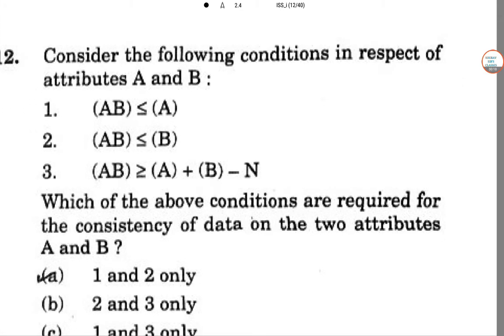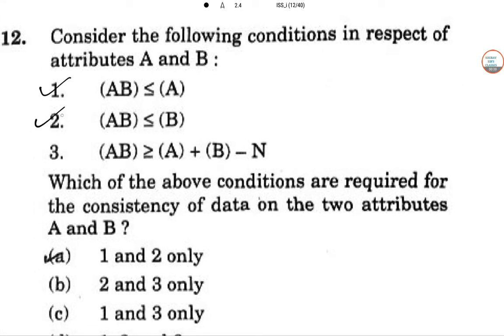In this video I am solving from question number 12. Consider the following conditions with respect to the attributes A and B. These are the 3 things given. Which of the following conditions required for the consistency of the 2 attributes? So A, B, A rather than equal to 0. So this is the basic thing.